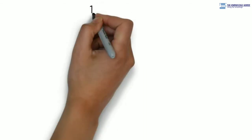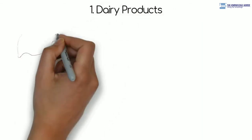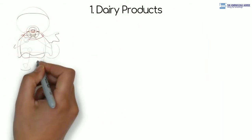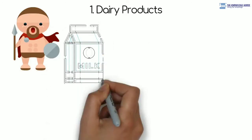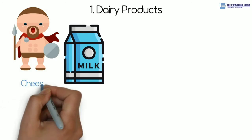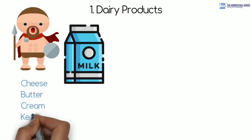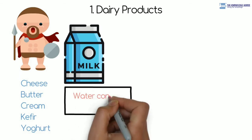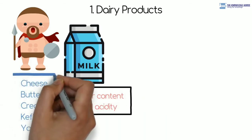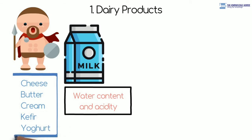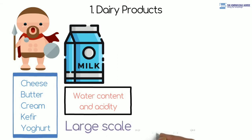Products: 1. Dairy Products. Since ancient days, milk is converted into various products for its preservation purpose. Example: cheese, butter, cream, kefir, yogurt, etc. Water content and acidity of the milk changes during formation of these products and texture, taste and flavor is improved. These processes are performed on large scale with more skill.